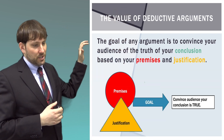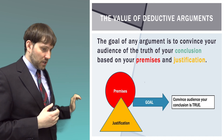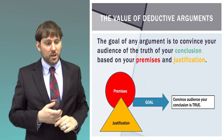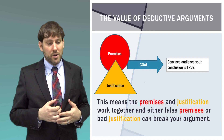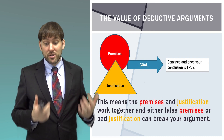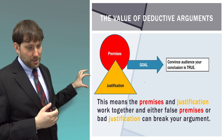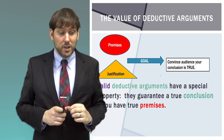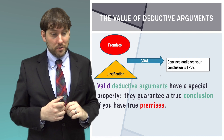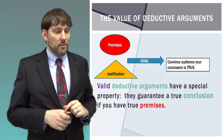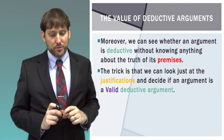The goal of any argument is to convince your audience of the truth of your conclusion based on your premises and justifications. Premises and justifications work together, and either false premises or bad justification can break an argument. In a valid deductive argument, there is a special property: it can guarantee a true conclusion if you have true premises, and the justifications are extremely strong to the point where people do not doubt them. Moreover, we can determine if an argument is validly deductive without knowing anything about the truth of its premises.